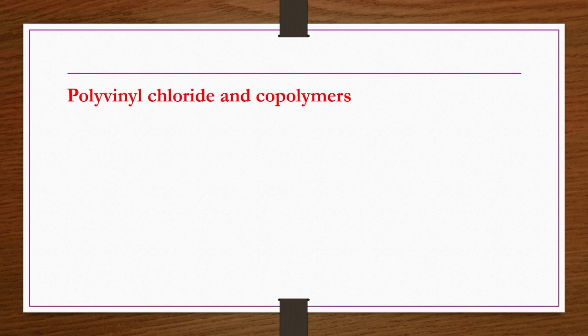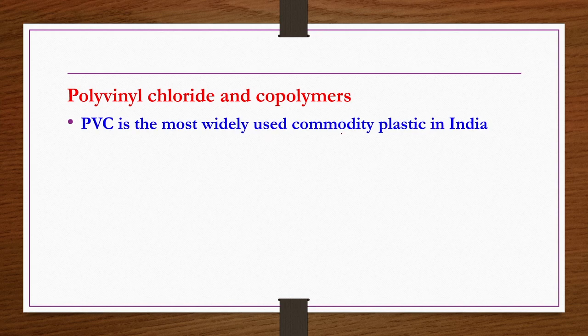Let us start with PVC. PVC stands for polyvinyl chloride and is one of the most important polymers with a large number of applications in the commodity market. PVC is the most widely used commodity plastic in India. We will discuss polyvinyl chloride and its copolymers—not only the vinyl chloride monomer, but also other monomers that may join together to form copolymers of the polyvinyl chloride category. The purpose of copolymerization is to enhance certain properties.